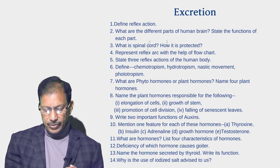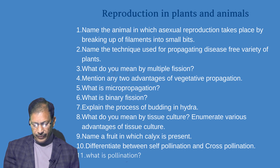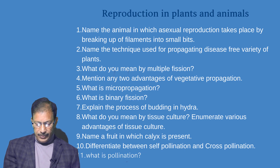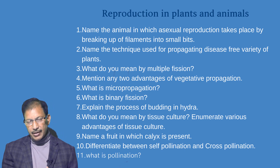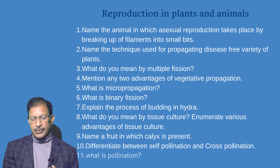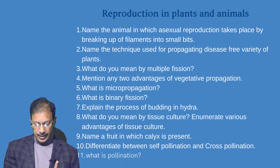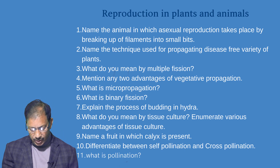What is the use of iodized salt and why is its use advised? Then, Reproduction in Plants and Animals: Name the animals in which asexual reproduction takes place by breaking up of the filament into small bits. Name the technique used for propagating disease-free varieties of plants. What do you mean by multiple fission? Mention any two advantages of vegetative propagation. What is micropropagation? What is binary fission? Explain the process of budding in Hydra. What do you mean by tissue culture? Enumerate various advantages of tissue culture. Name a fruit in which a calyx is present. Differentiate between self-pollination and cross-pollination. What is pollination?